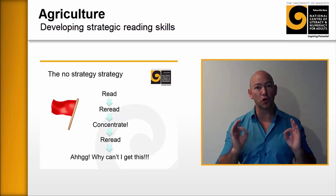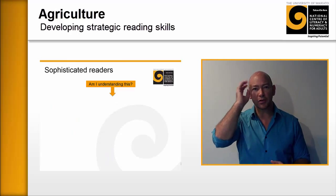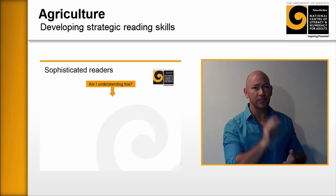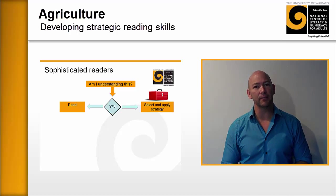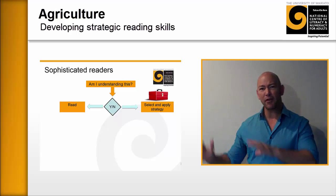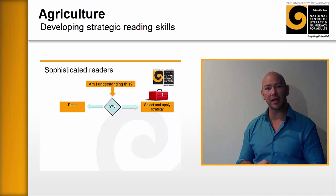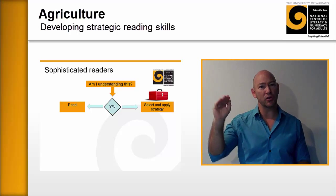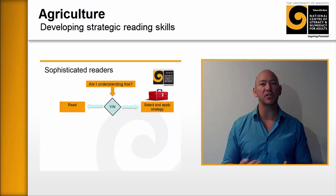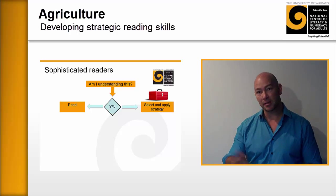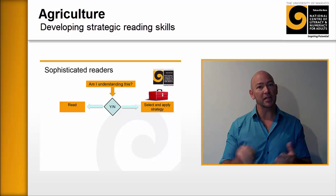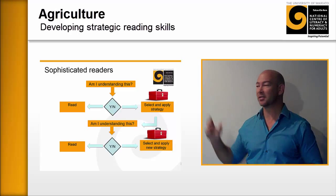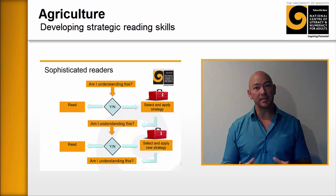In contrast, think about what a good comprehender does. A good comprehender constantly has this question in their head: 'Am I understanding what I'm reading?' When they start to read, they begin with this question in mind, and the moment they don't understand what they're reading, they stop and take action. They have a mental toolbox of strategies, and when they realize they're not understanding, they take an appropriate strategy and apply it to the text.